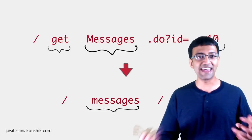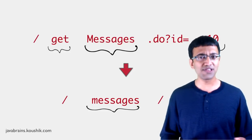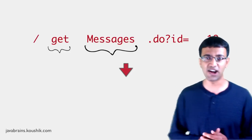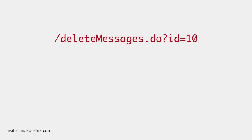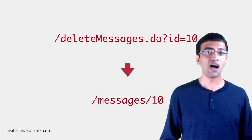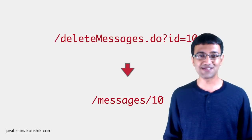You could argue that accessing /messages/10 gets the message, right? But what about the other operations? We've just looked at getting data so far. You could have URIs that submit data — imagine a URI like postMessages.do?id=10. The RESTful URI equivalent would still be /messages/10. How about deleting? deleteMessage.do?id=10 would also map to /messages/10. How can the same URI perform all these different operations, and how does it know when to do what?